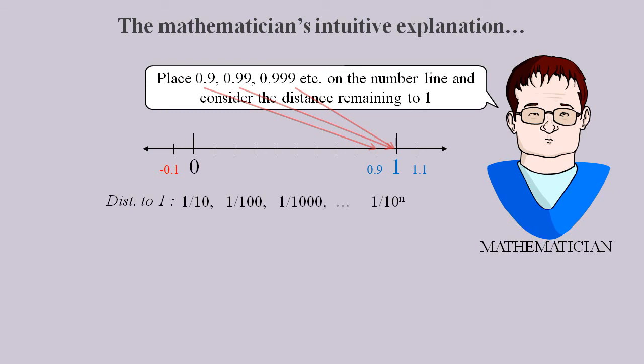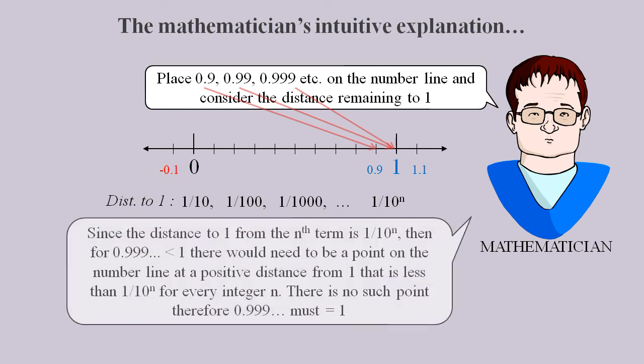So if 0.9 recurring was less than 1, we should be able to find a point that's between 1 over 10 to the power n and the point 1 for all possible values of n. And since no point exists, it must equal 1.